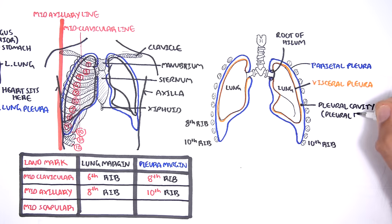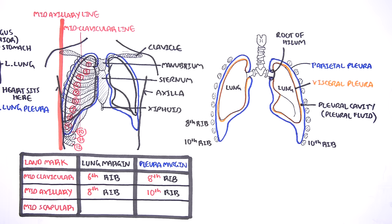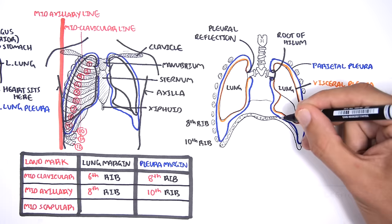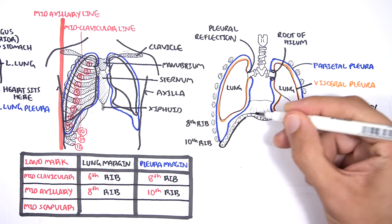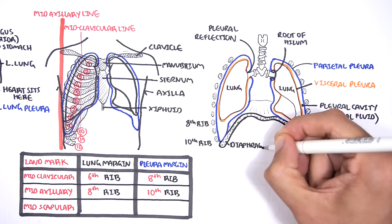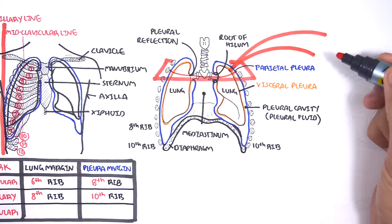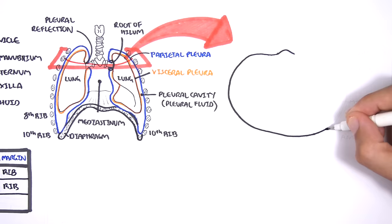The pleural fluid flows through the pleural cavity. The pleural reflection is essentially a line where the pleural membrane changes direction. The parietal pleura in blue covers the superior surface of the diaphragm and moves with the diaphragm during respiration. Here is the mediastinum where the heart sits. Now let's cut a cross-section of this area of the thorax to better understand the pleural membranes and the pleural reflections.